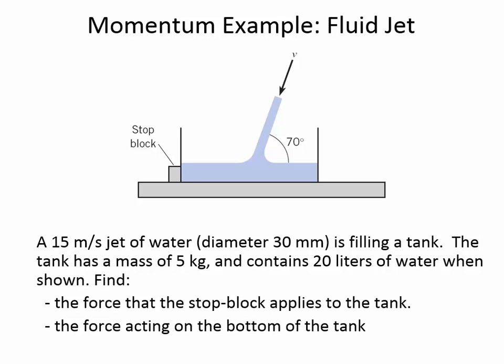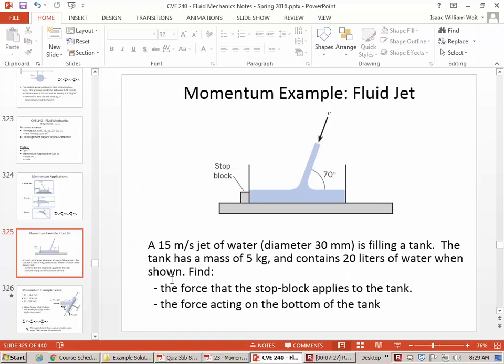For the x direction, we start with preliminary calculations: the area of the jet, the weight of the tank, and the weight of the water. Since there's no flow out — only a jet coming in — the outflow term cancels entirely. The mass flow rate equals density times the cross-sectional area of the jet times the jet velocity. The angle is only accounted for once, in the velocity component, not in the mass flow rate.